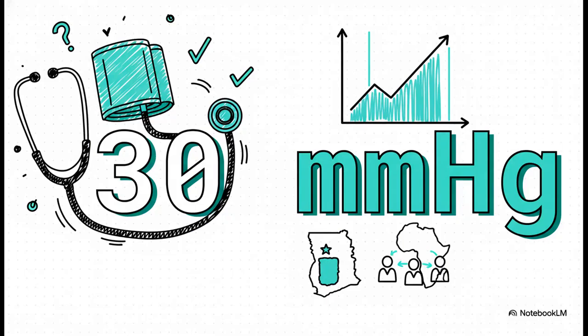You run the numbers and bam, your sample gives you an average of 130 millimeters mercury. Simple enough. Looks like you have your answer. You could just report back and say the average is 130. Problem solved? Well, not so fast. Is that really the whole story?